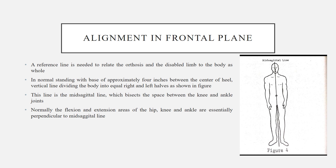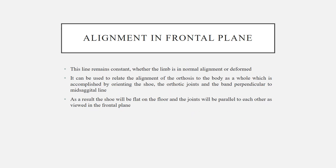Alignment in the frontal plane: A reference line is needed to relate the orthosis and the disabled limb to the body as a whole. In normal standing with a base of approximately 4 inches between the centers of the heels, a vertical line divides the body into equal right and left halves. This line is the mid-sagittal line, which bisects the space between the knee and ankle joints. Normally, the flexion and extension axes of the hip, knee, and ankle are essentially perpendicular to this mid-sagittal line. This line remains constant whether the limb is in normal alignment or deformed, and can be used to relate the alignment of the orthosis to the body as a whole by orienting the shoes, orthotic joints, and bands perpendicular to this mid-sagittal line. As a result, the shoe will be flat on the floor and the joints will be parallel to each other as viewed in the frontal plane.